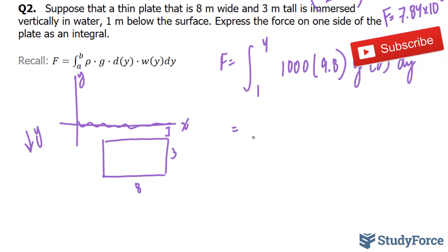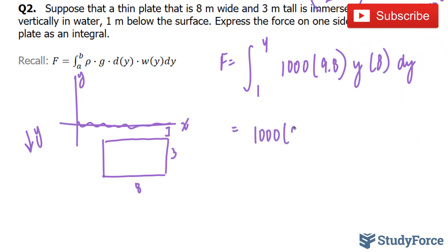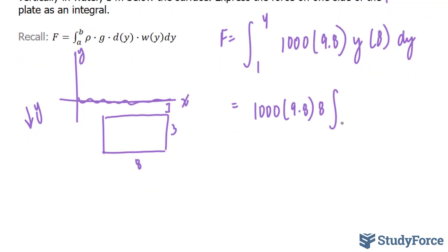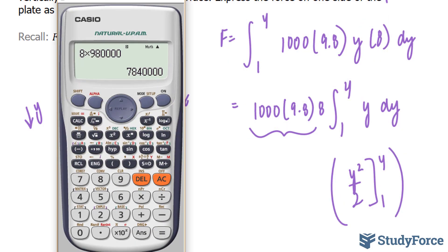I'll pull out all the constants. 1,000 times 9.8 times 8, between 1 and 4, y with respect to y. This becomes y to the power of 2 over 2, and we're going to find out what that is at 1 and 4. And then, multiply that by what this is.